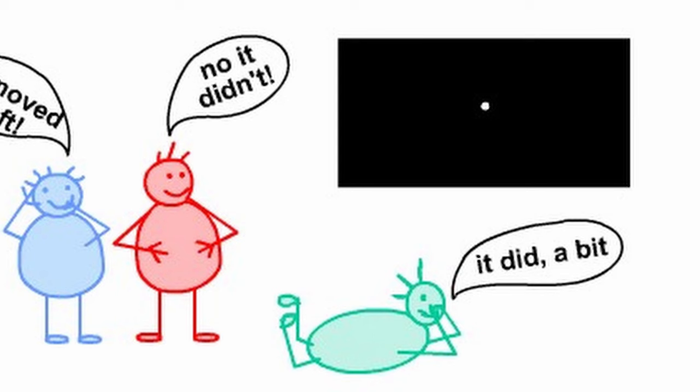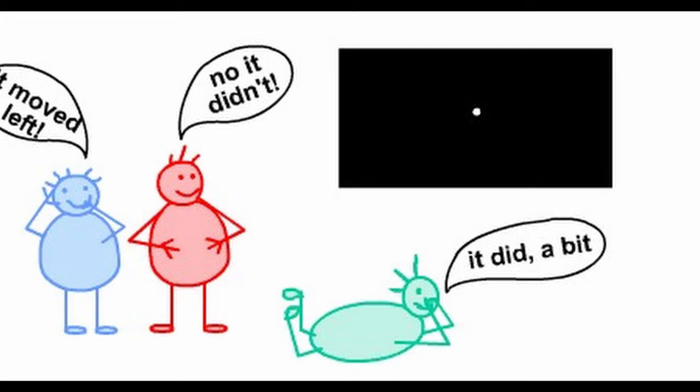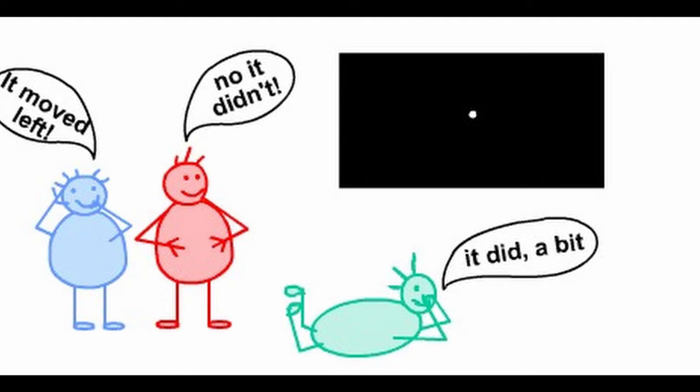Sherif investigated whether individuals would conform to group norms when they are put in an ambiguous, unclear situation. Asch argued that because there was no clear answer to this experiment, how could we be sure that an individual person conformed when there was indeed no correct answer to conform to?